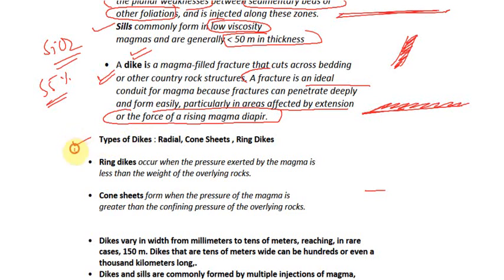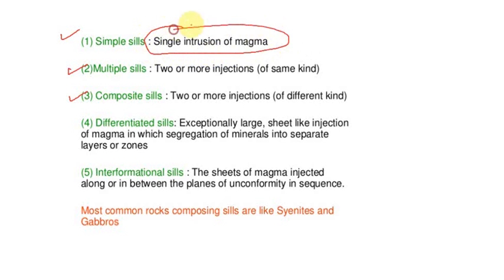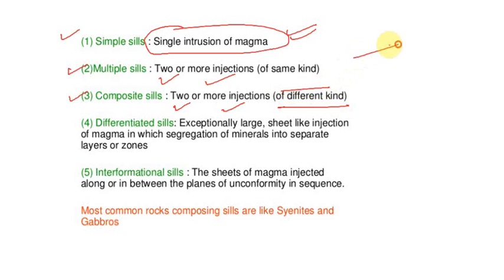There are different types of dykes — radial dykes, cone sheets, and ring dykes. Similarly, sills also have different types: simple sills (single magma intrusion), multiple sills (two or more injections of the same kind), and composite sills (two or more injections of different compositions). There is also differentiated sill — when the sill sheet is very large, minerals segregate within it. For example, the Palisade Sills in the USA, which are around 300 meters thick — in such thick sills, olivine accumulates at the bottom.